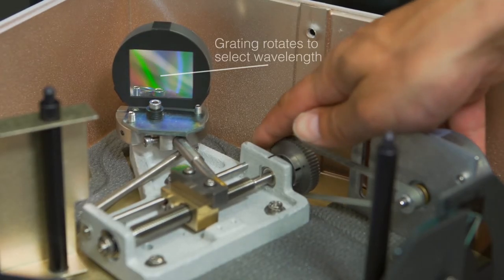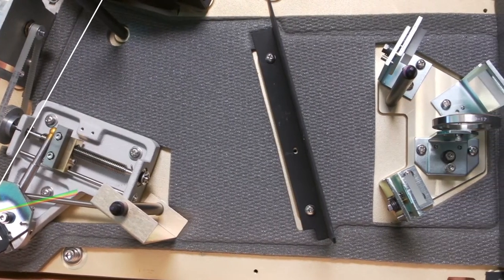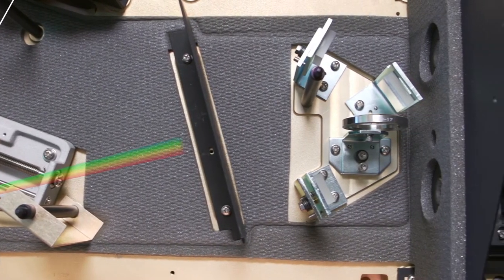The grating rotates slightly to select that wavelength. The light beam diffracts off the grating and exits the monochromator through the exit slit.